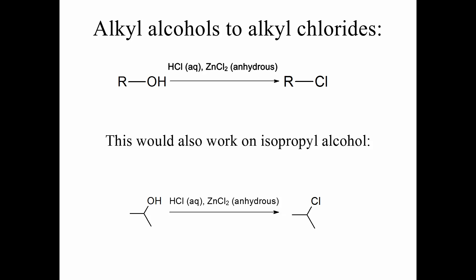The usual way of preparing alkyl chlorides from alcohols is by refluxing the suitable alcohol, in our case that would be isopropyl alcohol, with a mixture of concentrated hydrochloric acid and anhydrous zinc chloride.